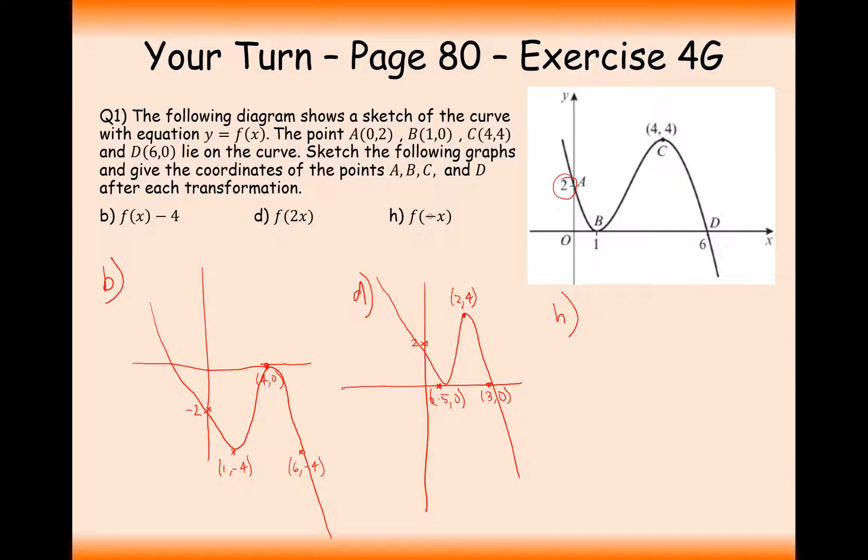H here is a reflection because it's got a negative symbol in there. And it's inside the brackets and that affects horizontal movement. Now inside the brackets, remember, is also opposite land. But the opposite of a reflection moving from left to right or right to left is moving left to right and right to left. So it doesn't really matter about it being opposite lands for a reflection.